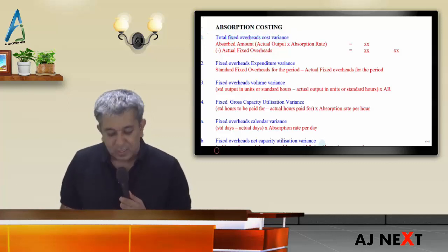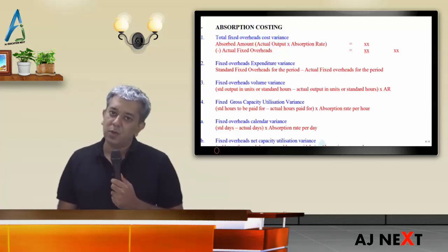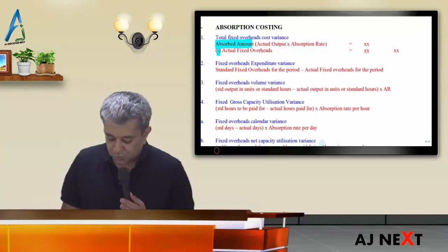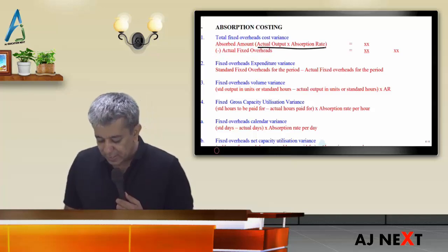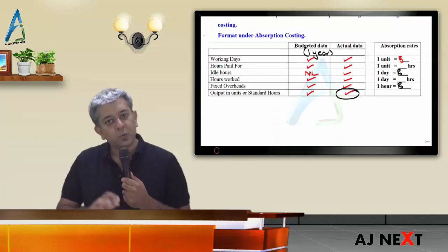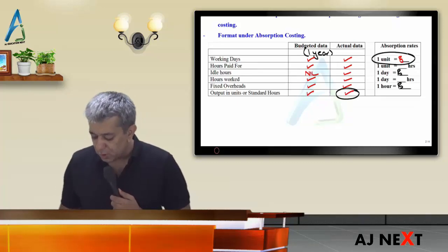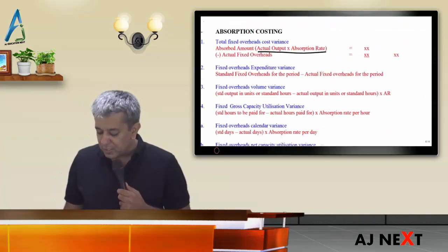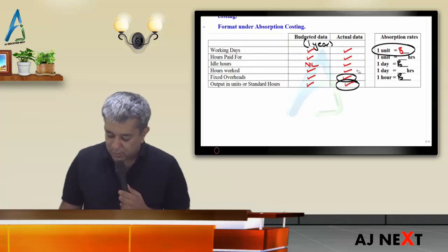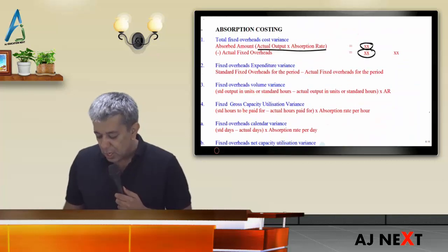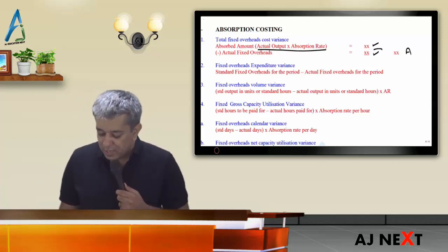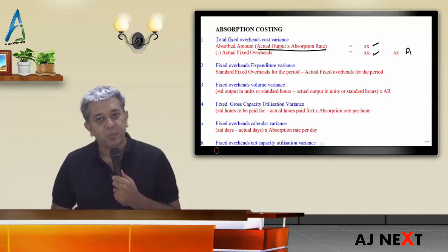Let's compute each variance under absorption costing. First: total fixed overhead cost variance. This represents under or over absorption. For that you need two figures — absorbed amount and actual amount. Absorbed amount equals actual output multiplied by absorption rate per unit. Subtract actual fixed overheads from this. If actual expense is more than absorbed amount, variance is adverse; if actual expense is lower, variance is favorable.